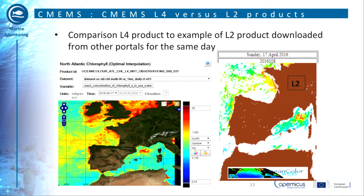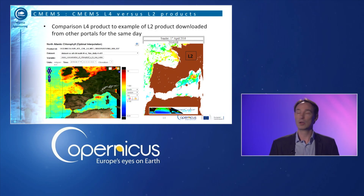This last slide shows the advantage of using level 3 or level 4 products available from CMEMS versus level 1 or level 2 products. On the left, a visualization of the mass concentration of chlorophyll in seawater on the 17th of April 2016, downloaded from the CMEMS catalog. This level 4 product is a result of the combination of multi-sensor data. On the right, a map of the same variable on the same day obtained from the Ocean Color Web portal from NOAA, which displays a level 2 product characterized by a lot of data gaps compared to the one downloaded from CMEMS.